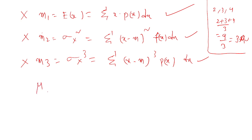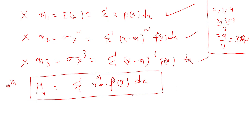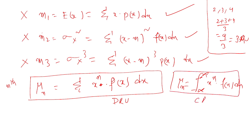Then they go for the nth moment — moment about the origin, denoted with μₙ. That equals sigma of (x minus m) to the power n multiplied with p(x) dx. This is the nth averaging process defined as moment about the origin for discrete random variables. For continuous random variables, μₙ — moment about the origin — is defined as the integral from minus infinite to plus infinite of x power n times f(x) dx. This is for continuous random variables.